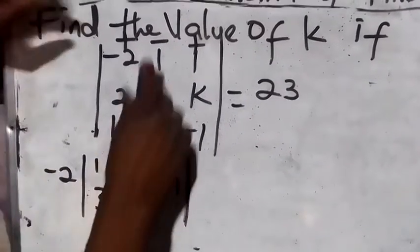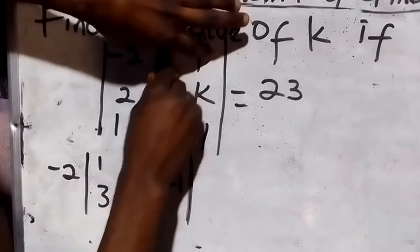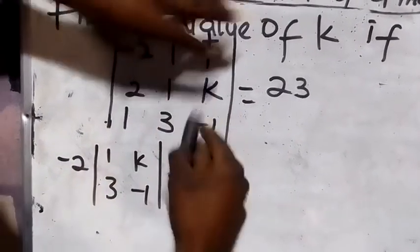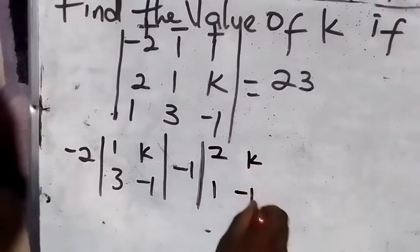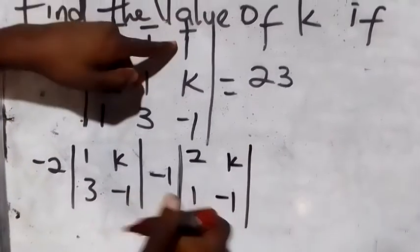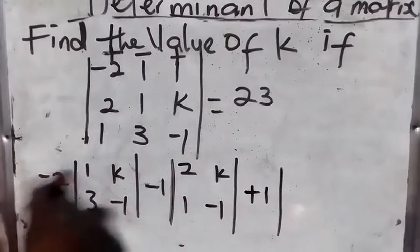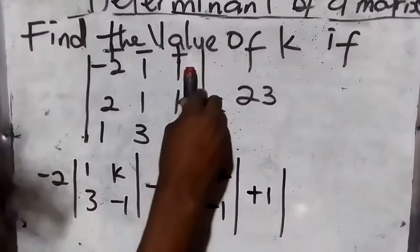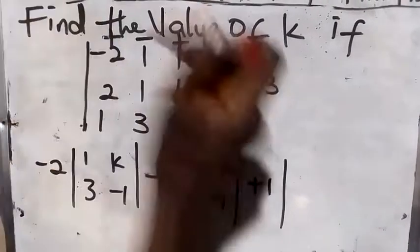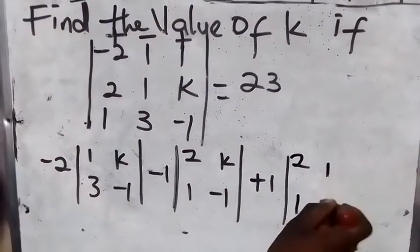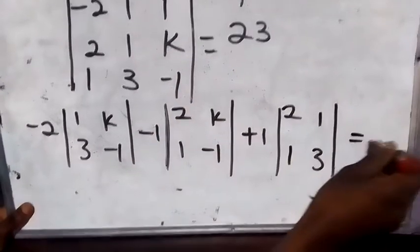For the second number, that is minus one — cross out the vertical and horizontal of minus one. What do you have? You have two, one, k, minus one. For the third number, that is plus one — cross out the vertical and horizontal of plus one, and you have two, one, one. Everything equals twenty-three.